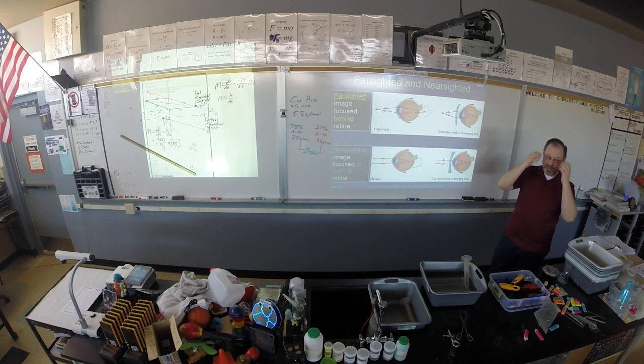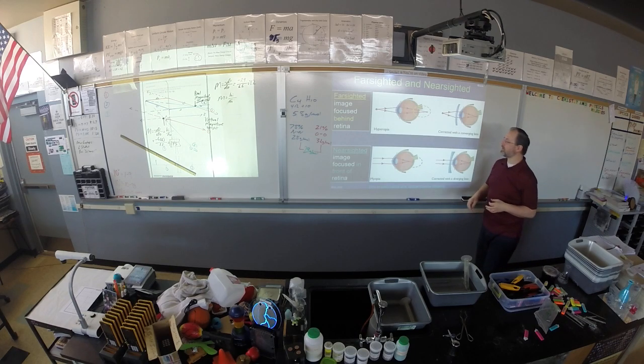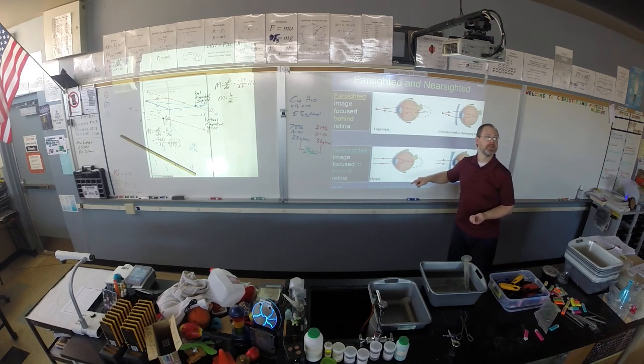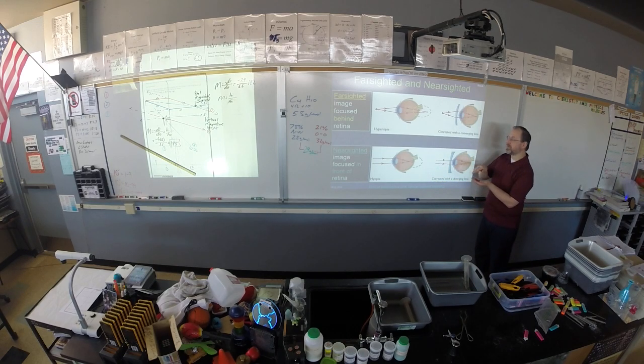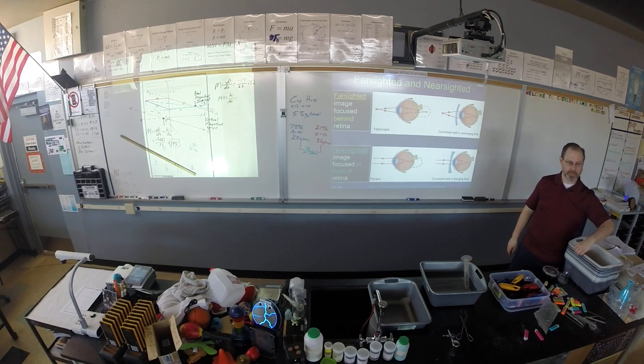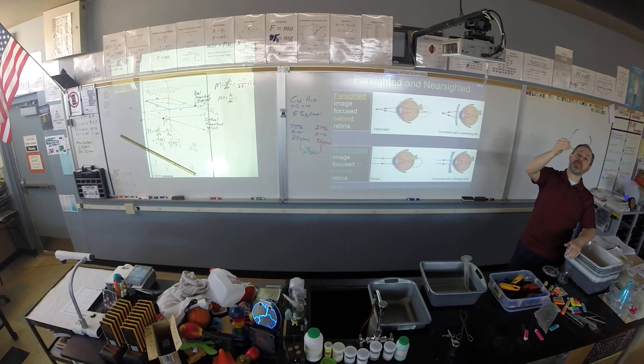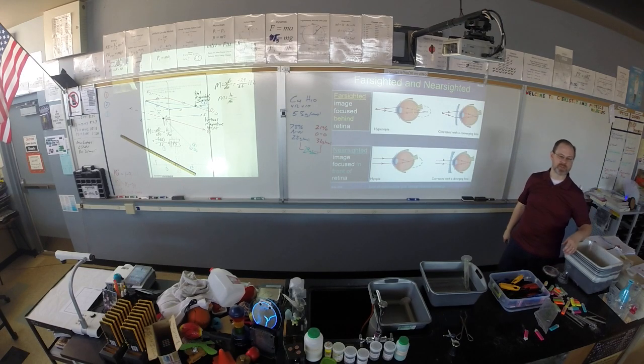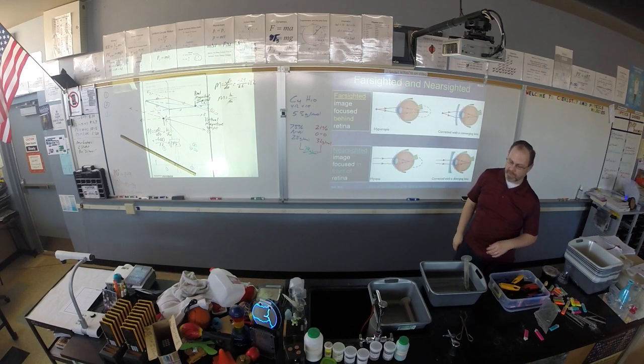That's nearsighted. And what happens with nearsightedness is your eye is converging the light too much or too soon. So you have to cause the light to diverge a little bit before it converges. So you need a divergent lens. If you are nearsighted, like most of us are, the center of our glasses are actually thinner than the outside. We're divergent.